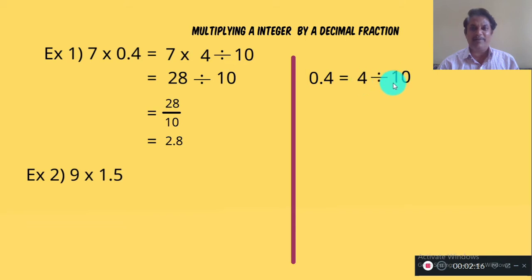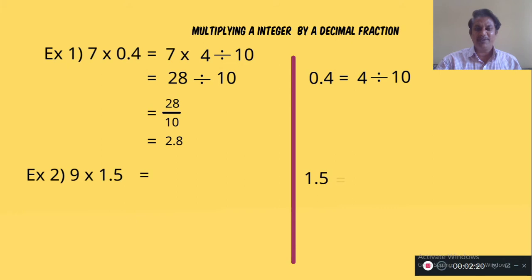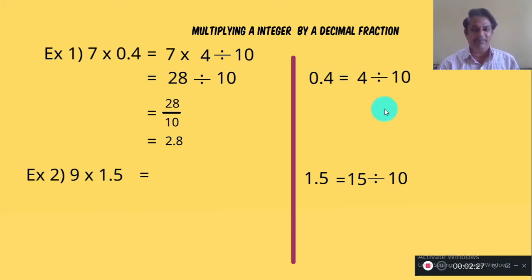Now observe the second example. 1.5 means 15 divided by 10. So we will multiply 15 divided by 10 by 9.